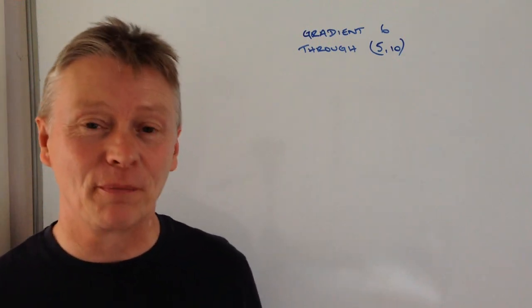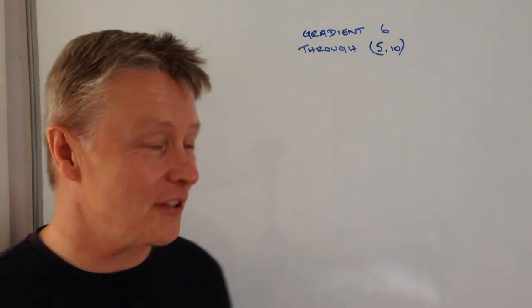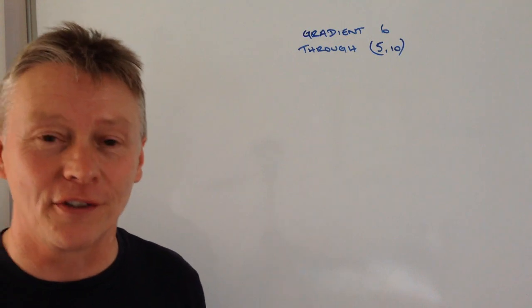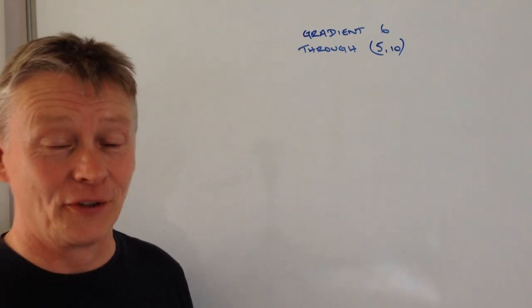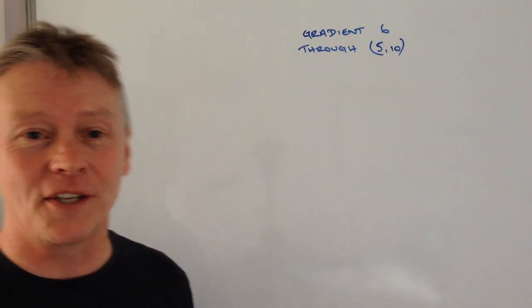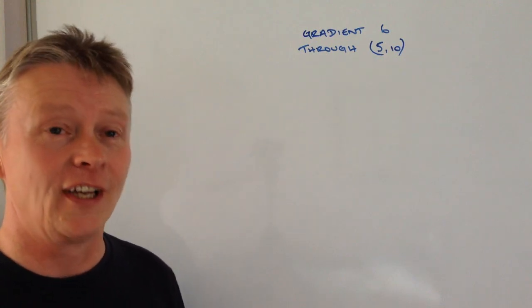Hi, in this particular video we're going to be looking at straight line graphs and we've been given this information that the straight line on the graph has a gradient of six and it passes through the point five ten.